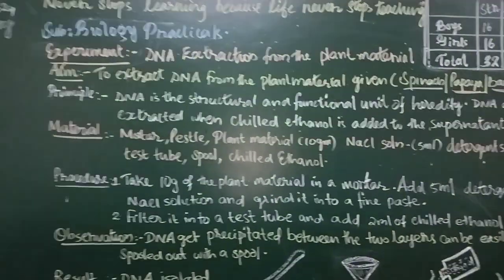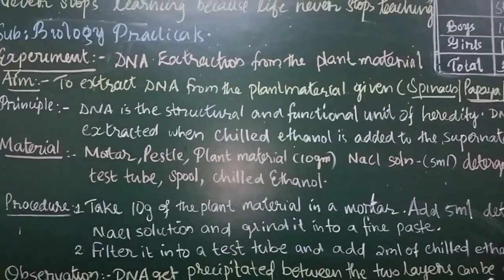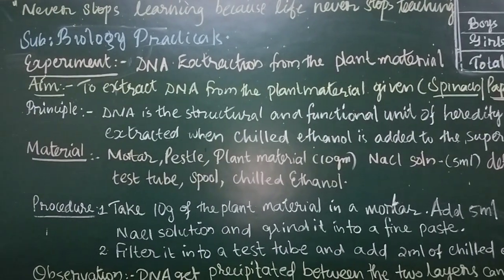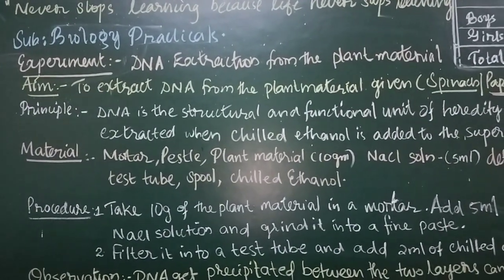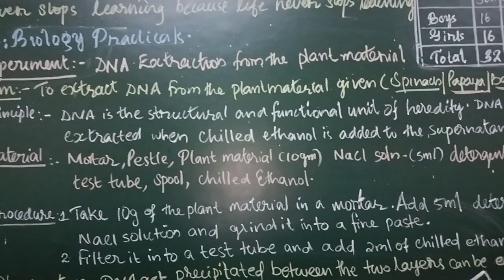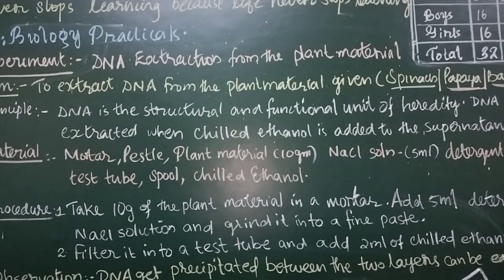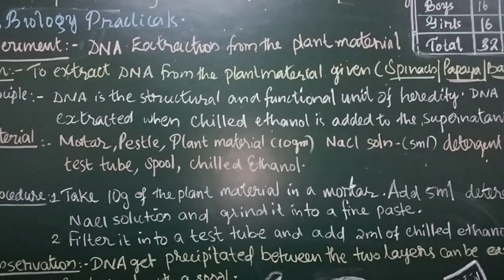Today we will be doing the extraction of DNA from plant material. The principle is that DNA is the structural and functional unit of heredity. DNA gets precipitated when chilled ethanol is added to the supernatant.